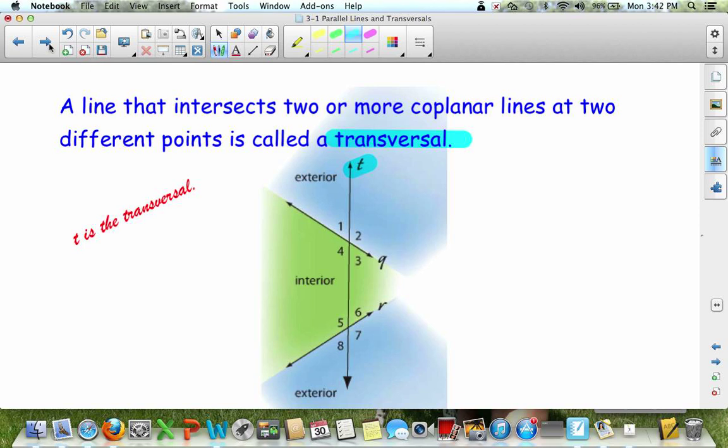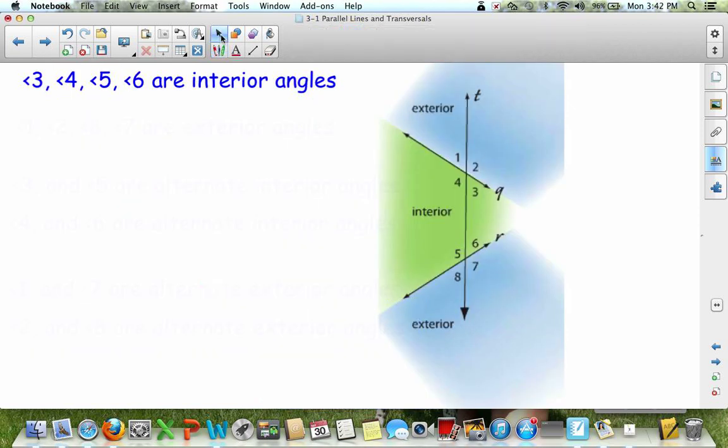So next we're going to look at the different types of angles that the transversal and these two coplanar lines create. And these are on your packet. If you want to draw this picture on your packet and put it in that large space above the parallel lines, that would be great. I just noticed that parallel planes, you can do that. And then you can have this picture.